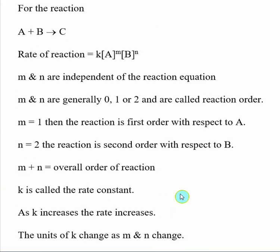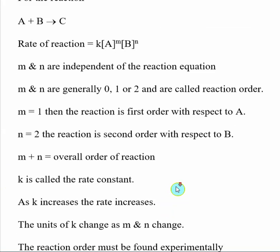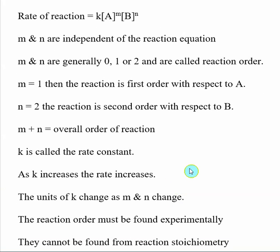K is what's called the rate constant. This is different for each reaction that you will be running. As K increases, the rate also increases. If you have a reaction with a large K, the reaction tends to go very quickly; a small K means the reaction goes relatively slowly.